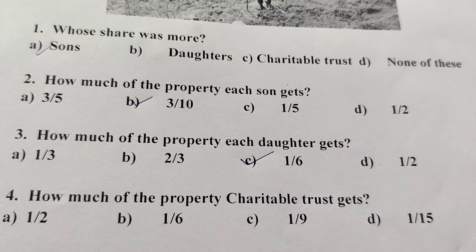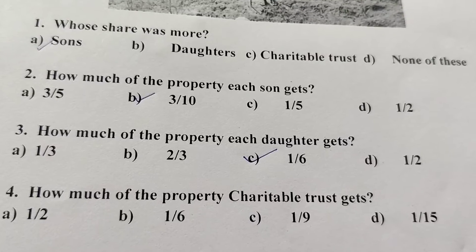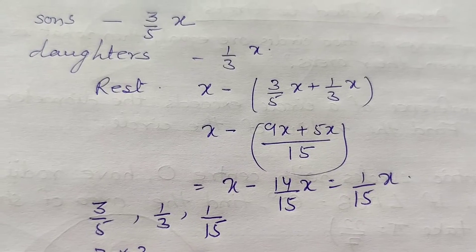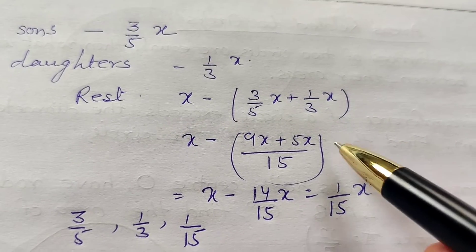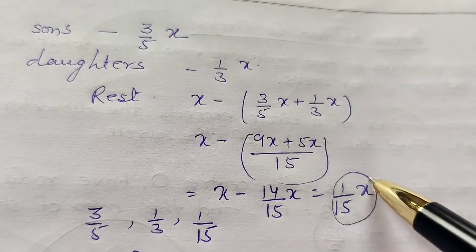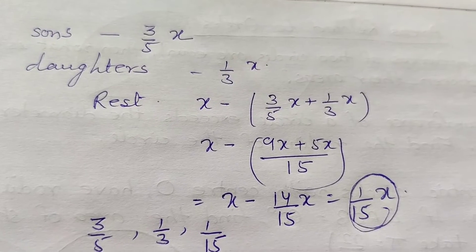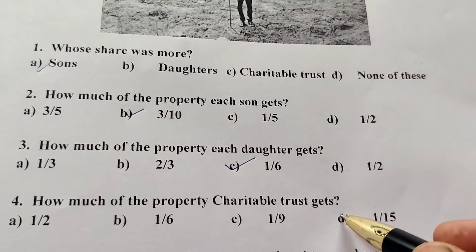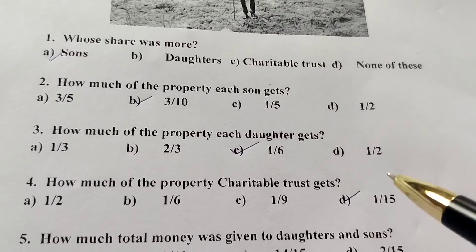And how much of the property charitable trust gets? Charitable trust gets the property we already calculated, 1/15 of X. Which part of the charitable trust is? 1/15. 1/2, 1/7, and 1/15 to the charitable trust.